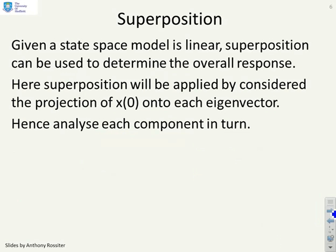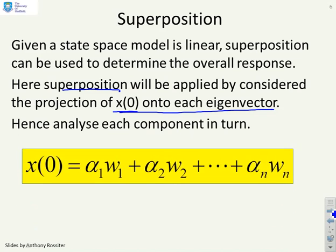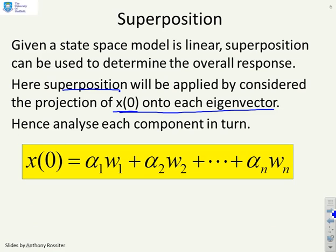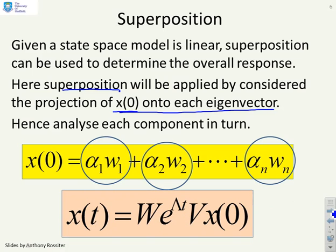Because a state-space model is linear, superposition can be used to determine the overall response. We project x(0) onto each eigenvector in turn, compute the response for each component separately, and then add them together. So we split the initial condition into components along each eigenvector and look at each of these components one at a time.